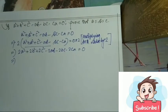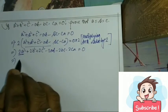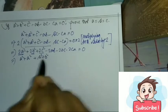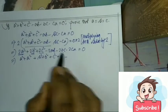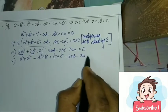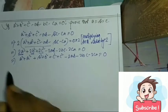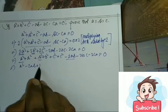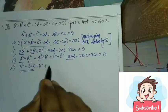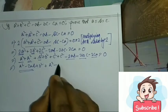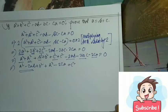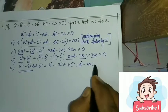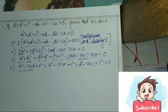Now we can write 2a² as a² + a², 2b² as b² + b², and 2c² as c² + c². The remaining part is -2ab - 2bc - 2ca = 0. We then regroup as: a² - 2ab + b², then a² - 2ca + c², then b² - 2bc + c² = 0.